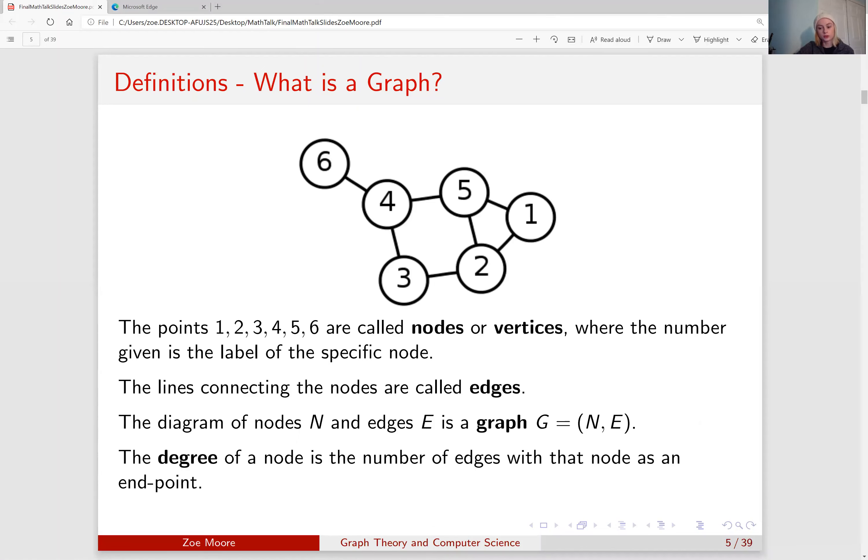To start out, what is a graph? In this diagram the points labeled 1, 2, etc. are called nodes or vertices where the number given is the label for the specific node. The lines connecting these nodes are called edges and this diagram of nodes and edges is a graph which we typically call g. The degree of a node is the number of edges with that node as an endpoint. So looking in this graph, node 5 has a degree of 3 because it is connected to 3 other nodes.